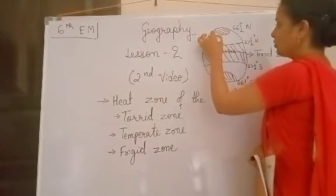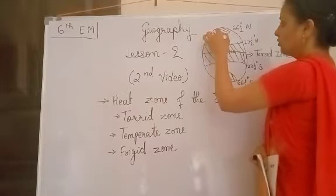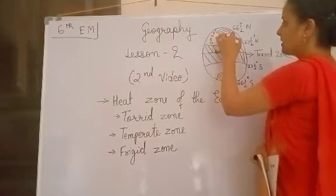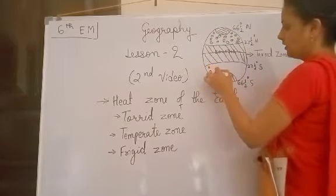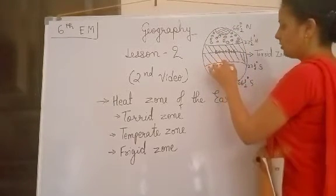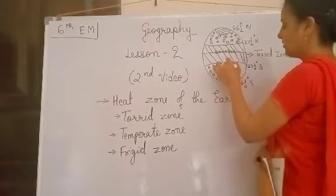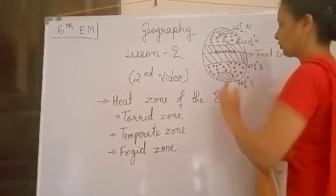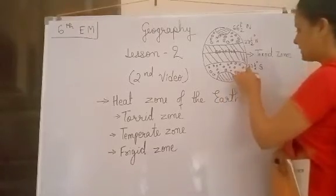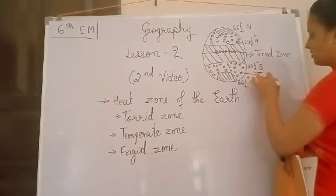Now, remaining path. If I talk about this path, this is counted as temperate zone. Understood? Either you talk about 66.5 degrees south, or 66.5 degrees north.